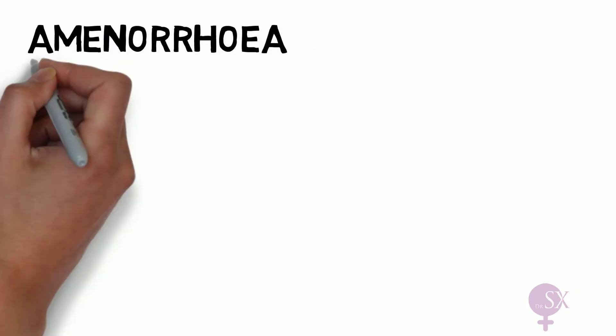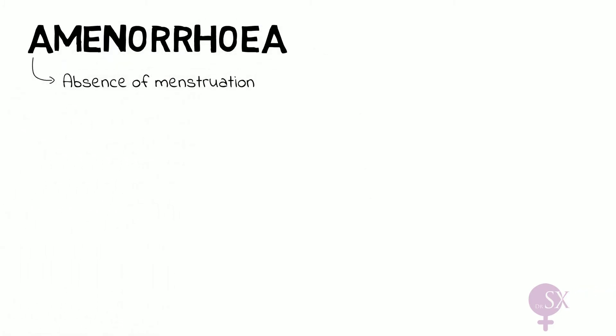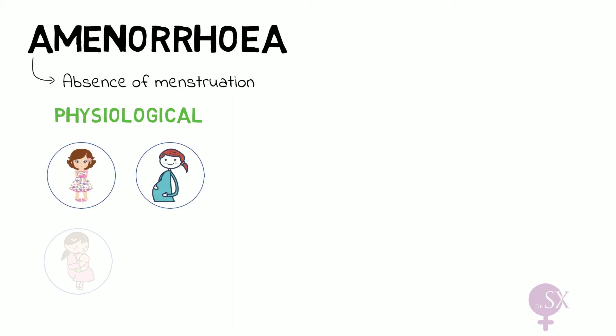Amenorrhea essentially refers to the absence of menstruation — that is, no periods. We have physiological amenorrhea, which is perfectly normal, and this occurs in young girls, during pregnancy, while breastfeeding, and in the menopause. It is normal not to see any periods during these stages of life.